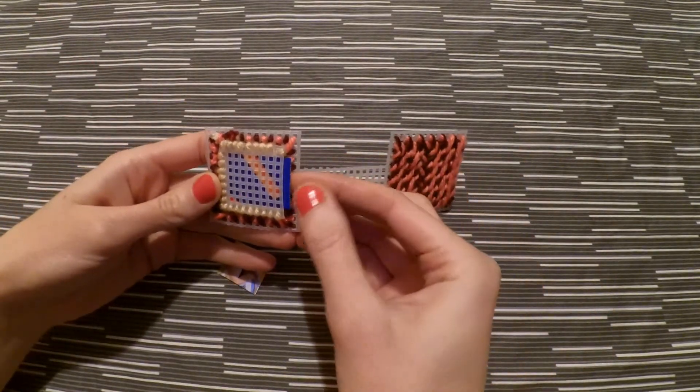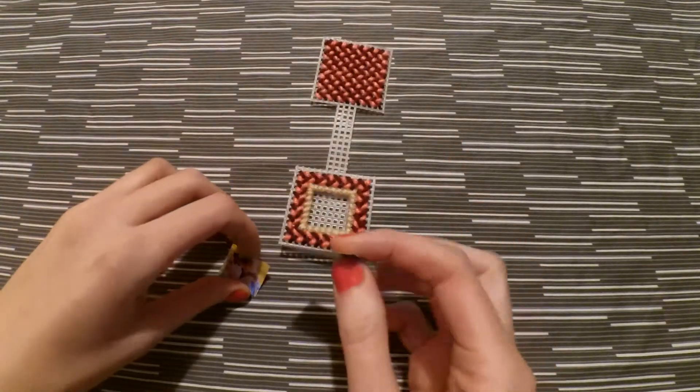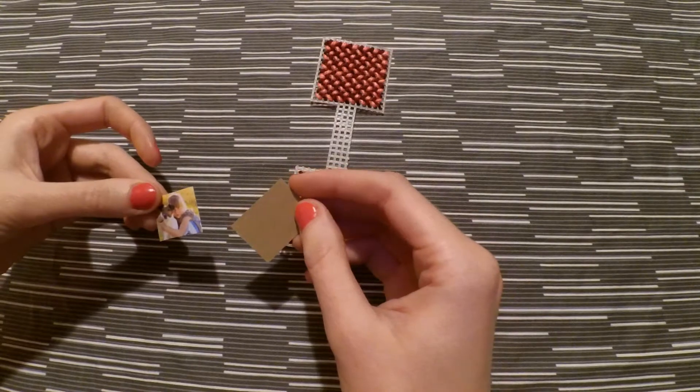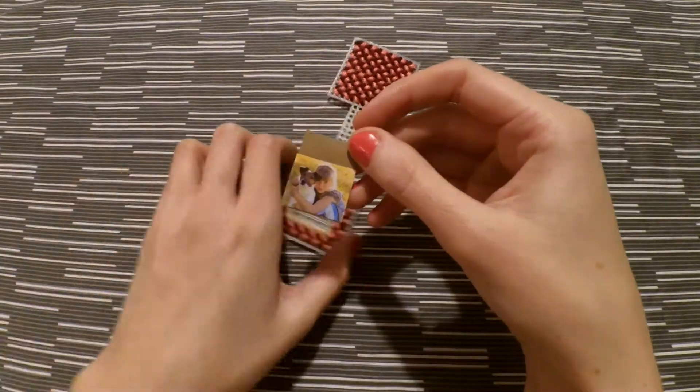So now you're just going to take your picture and glue it onto the cardboard and if you have a laminator I would probably laminate this just so that it stays protected. And then you're just going to slide your picture into the slot that we made at the back.